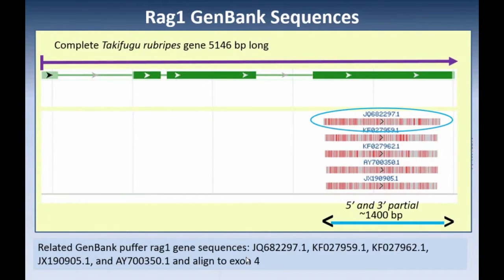If we continue to look at RAG1 sequences, the puffer fish gene is 5,146 bases long. Shown on the screen are some other GenBank accessions. It turns out that most people who use RAG1 as a molecular marker only determine the sequence for part of exon IV. So the sequences obtained from sequencing technology are five prime and three prime partial, and they are approximately 1,400 bases long.